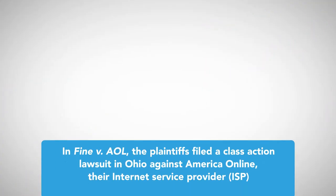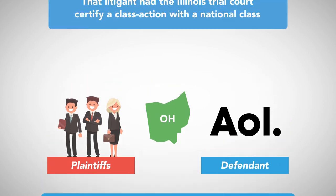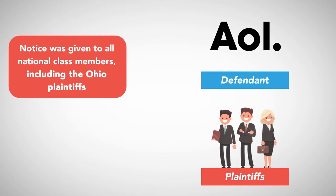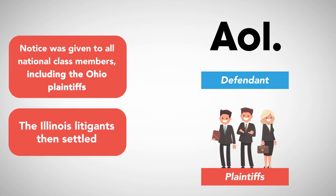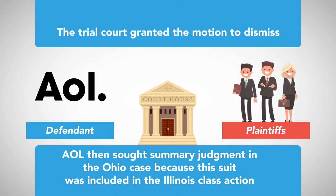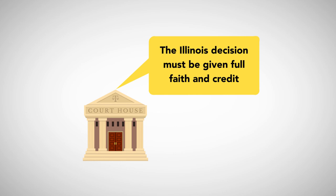In Fine v. AOL, the plaintiffs filed a class action lawsuit in Ohio against America Online, their internet service provider. A month earlier, an Illinois AOL customer had filed an identical action. That litigant had the Illinois trial court certify a class action with a national class, and notice was given to all national class members, including the Ohio plaintiffs. The Illinois litigants then settled. AOL then sought summary judgment in the Ohio case because that suit was included in the Illinois class action. The trial court granted the motion to dismiss, and the Ohio Court of Appeals affirmed, holding that the Illinois settlement precluded the Ohio class suit because the underlying claims were identical in both suits. As a result, the Illinois decision must be given full faith and credit.